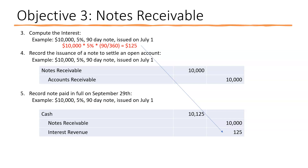If there is a financial statement date between when the note was issued and when it's paid, you must record an adjusting entry for interest earned — debiting interest receivable and crediting interest revenue. Make sure you understand that as well. That's it for chapter 8 notes. If you have any questions, send an email and we can set up time to talk through the material.